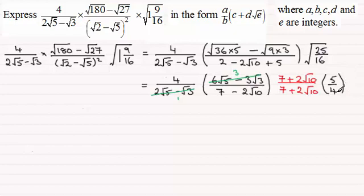So what have we got now? Well, I notice that this 4 here will now cancel out with that 4 there. So let's cancel that out, 1 there and 1 there. What we've got then is that this equals 3 times 5, which is 15, and then I've got 7 plus 2 root 10.